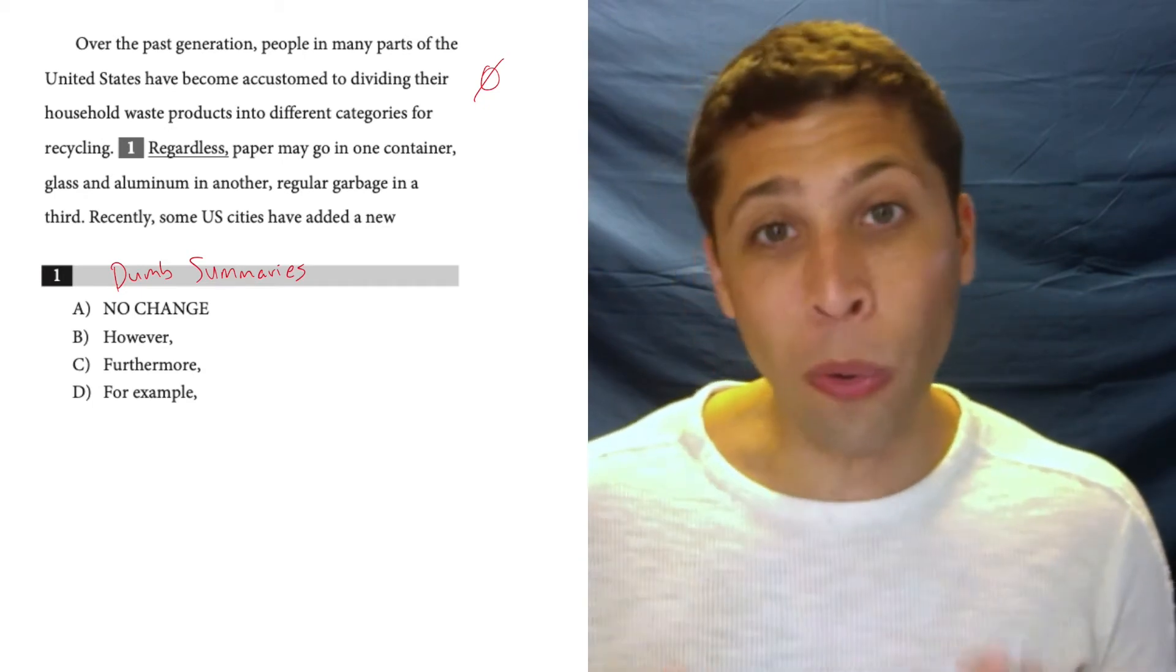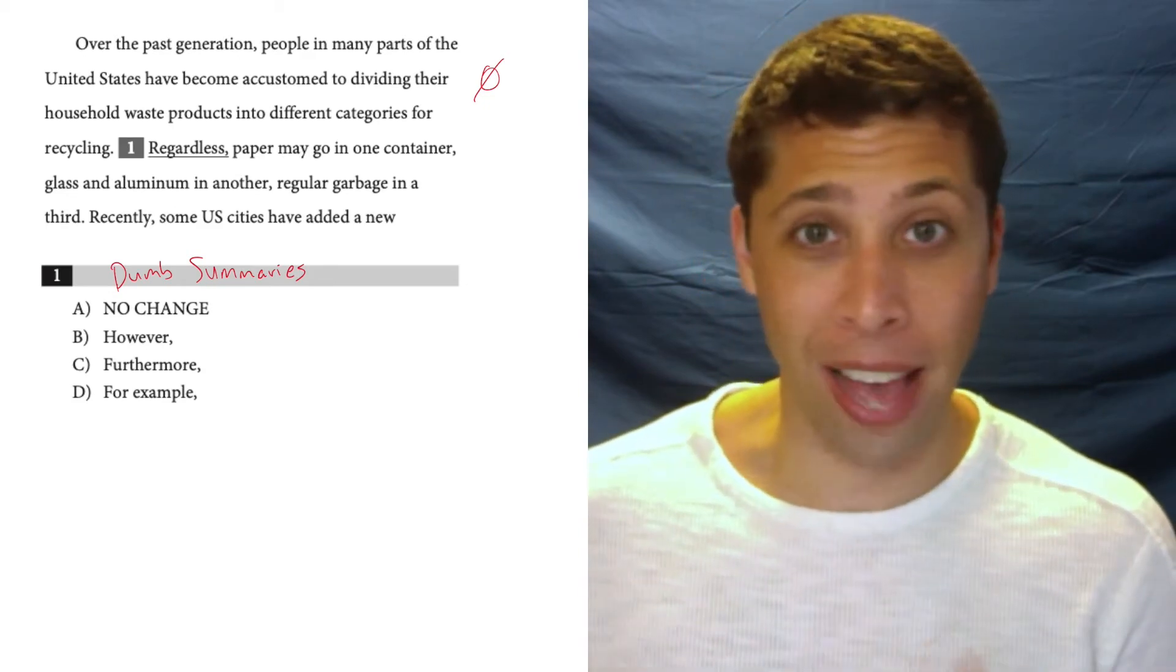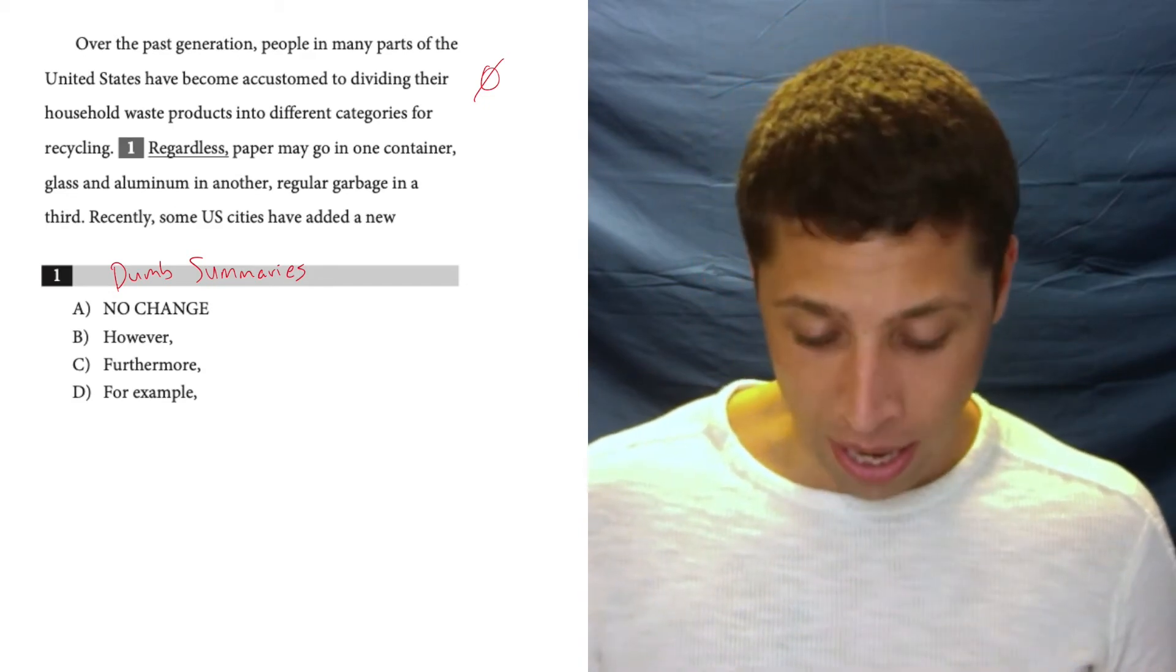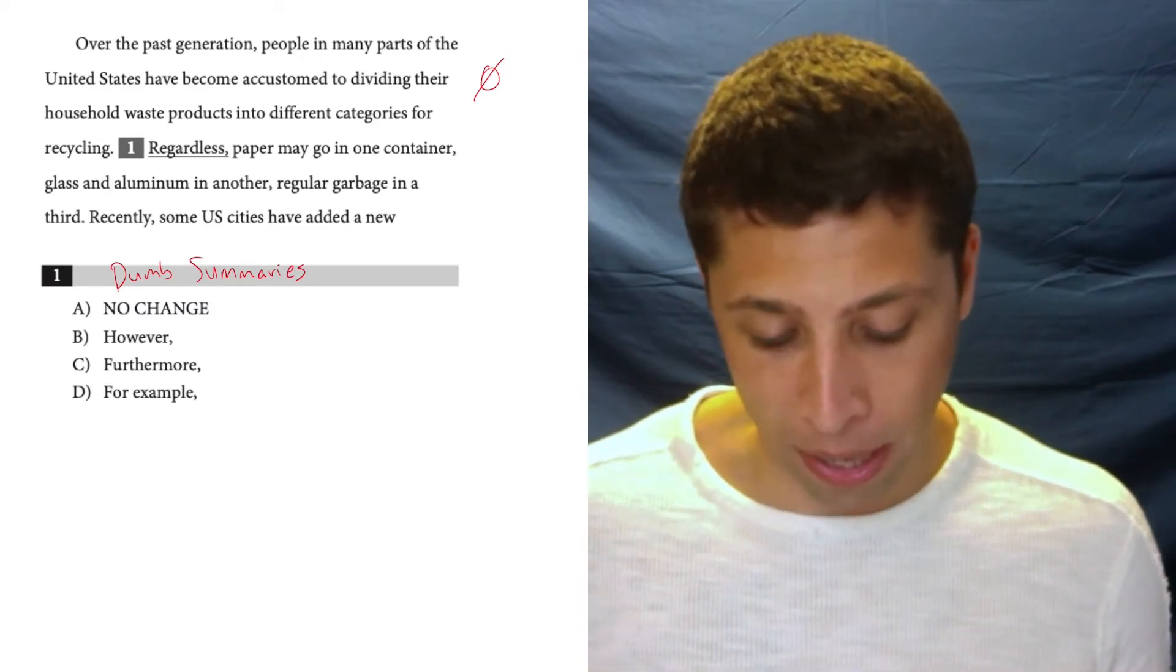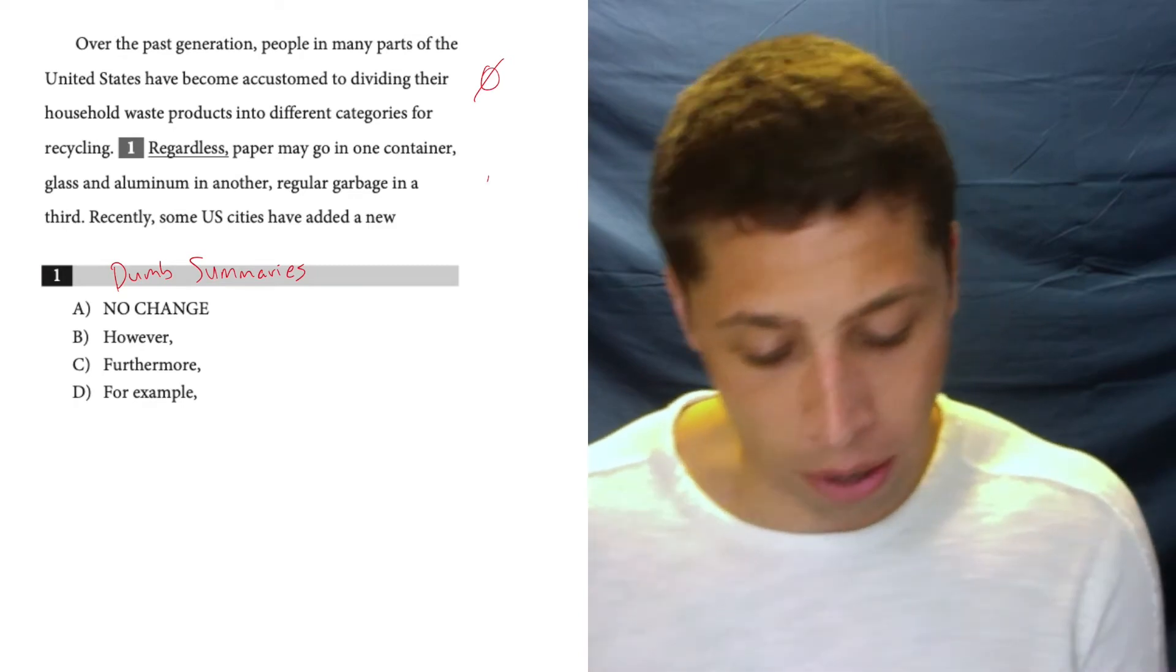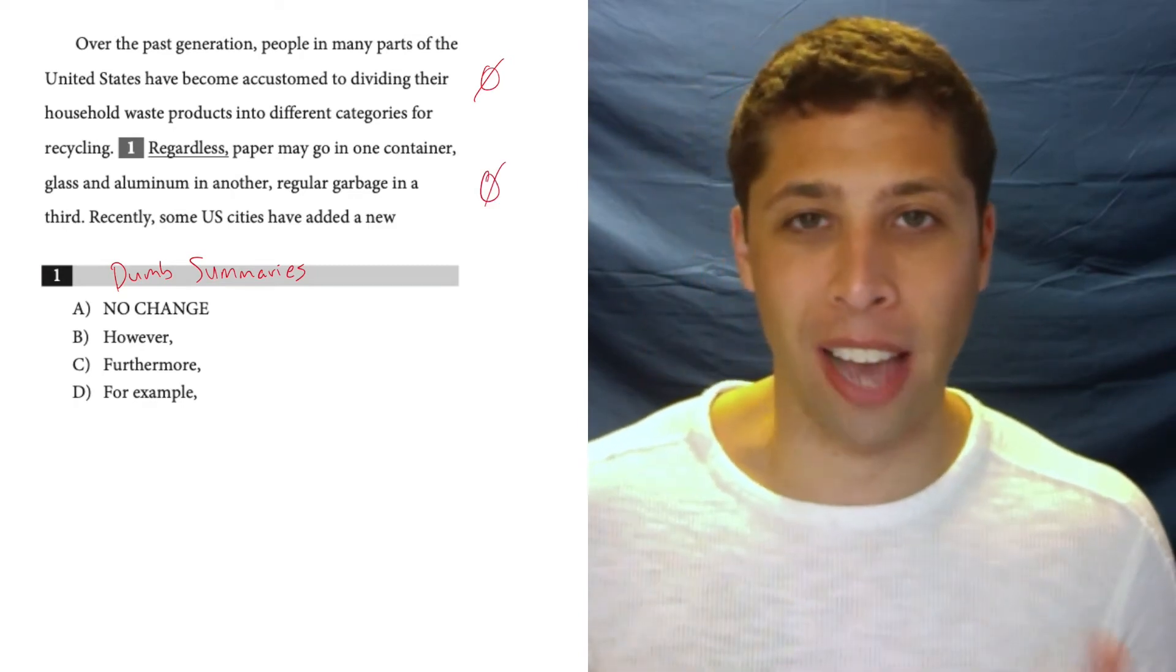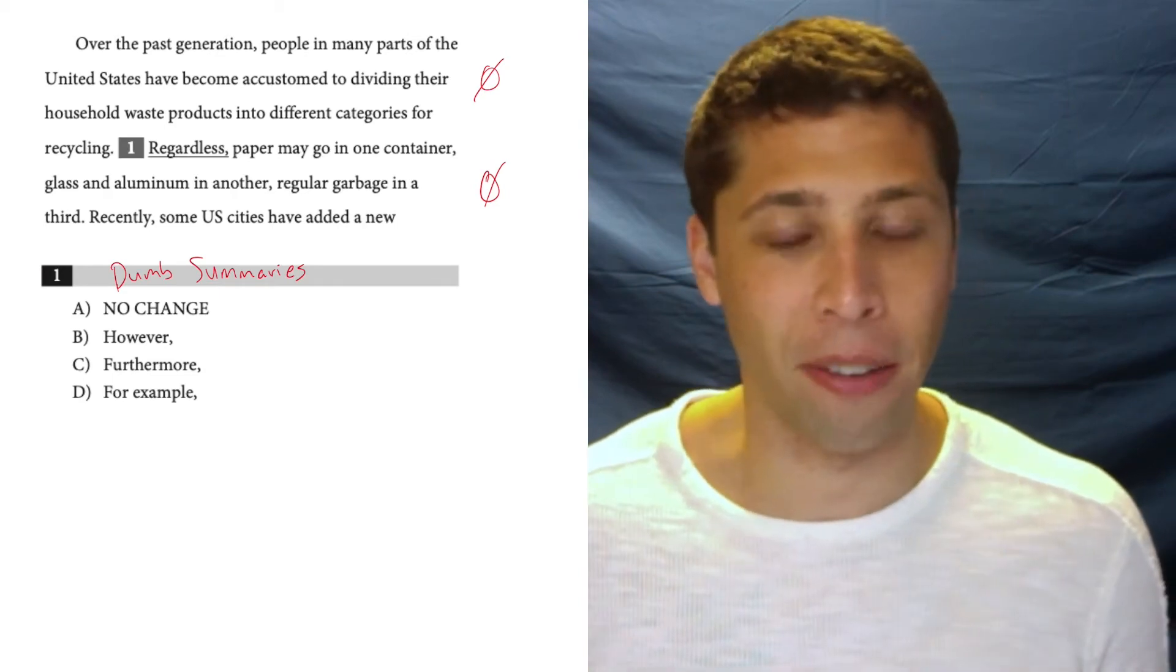Then I'm going to ignore the underlying transition word because I don't want to bias myself and pick that just because it's what I read first. So, looking at the second sentence, it says paper may go in one container, glass and aluminum in another, regular garbage in a third. Again, it seems kind of neutral. It doesn't really have a connotation, it's kind of just a statement of fact again.